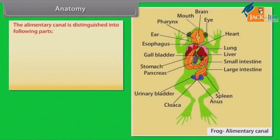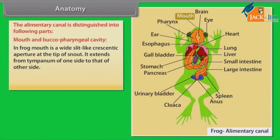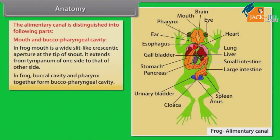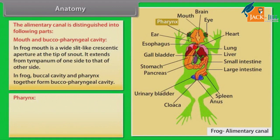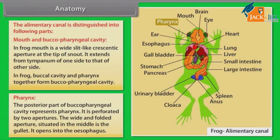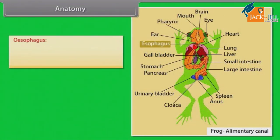Anatomy — Alimentary Canal: The alimentary canal is distinguished into the following parts. In frog, the mouth is a wide, slit-like, crescentic aperture at the tip of the snout, extending from the tympanum on one side to the other. The buccal cavity and pharynx together form the bucco-pharyngeal cavity. The posterior part represents the pharynx, which is perforated by two apertures. The wide, folded aperture situated in the middle is the gullet, which opens into the oesophagus.